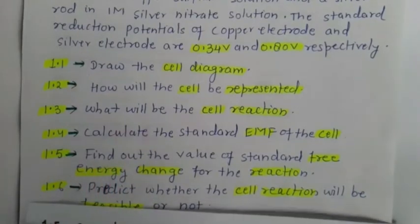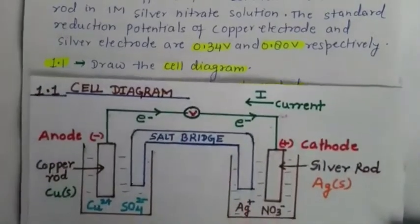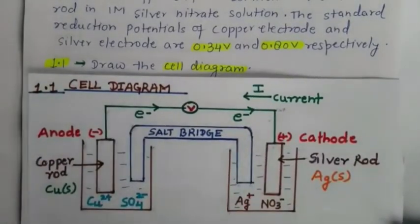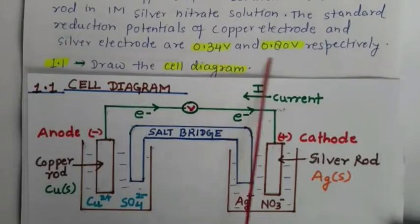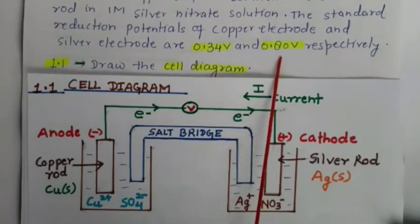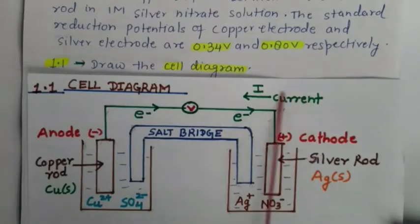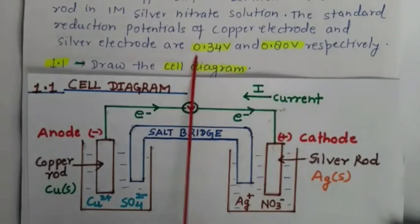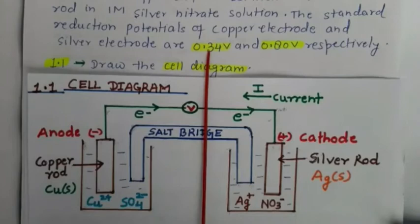Let us take these one by one. First, we draw the cell diagram. The reduction potential of the copper electrode is 0.34 volt and the silver electrode is 0.80 volt. Since the reduction potential of the silver electrode is greater than that of the copper electrode, the silver electrode will act as the reduction half cell and the copper electrode will act as the oxidation half cell.